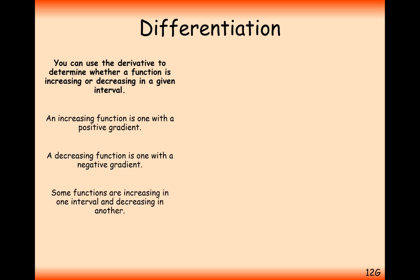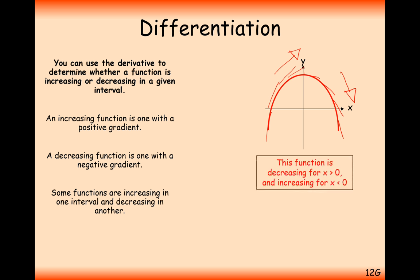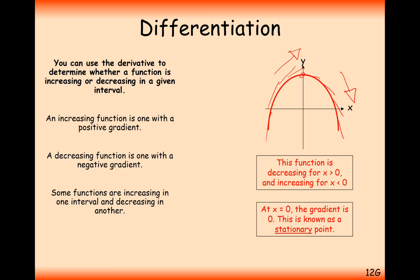For some functions, it goes from an increasing function to a decreasing function and maybe back to an increasing function. For example, on this curve, when x is a negative number the graph is an increasing function. But when it moves past the zero marker, it starts to move downhill — making it a decreasing function. When x equals zero exactly, it has a gradient of zero.